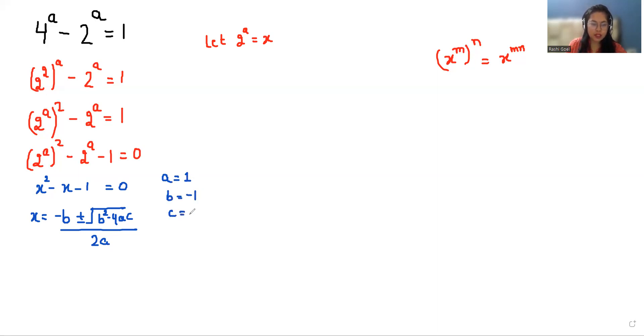The coefficient of x is -1 and c is the constant, which is -1. So let's put the values: x = -(-1) ± √((-1)^2 - 4(1)(-1)) / 2(1).